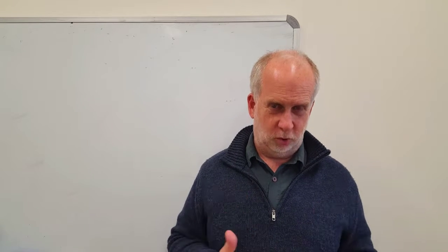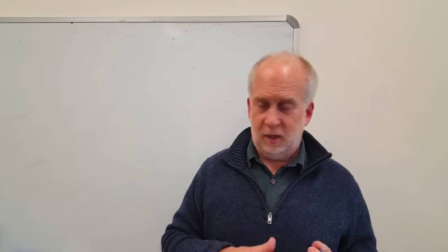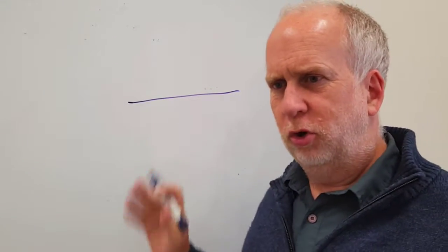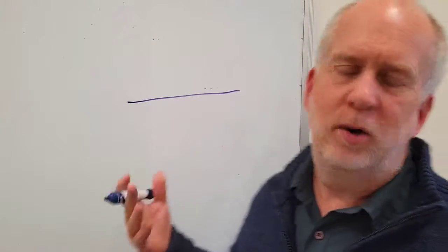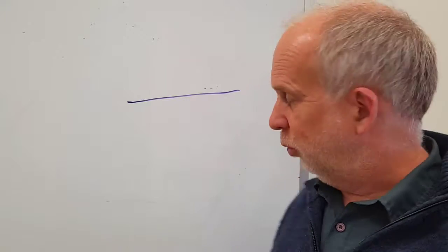Now an ideal measurement doesn't disturb what you're measuring. So if you had a wire and you wanted to work out what current was going down it, you wouldn't disturb it - you'd just have to look at the wire and work out what current was going down. Unfortunately that's not really possible.